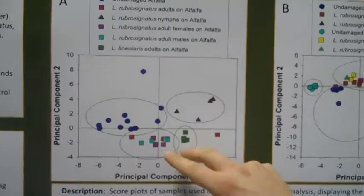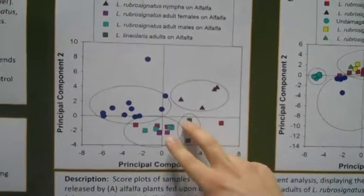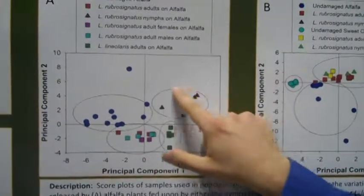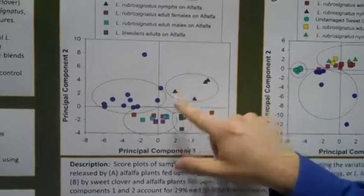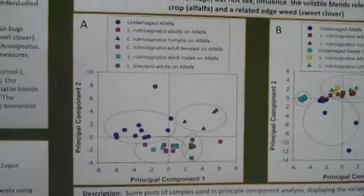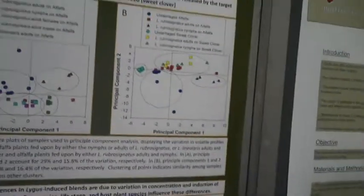Then Lygus rubrosignatus nymphs, this set of data here, clustered separately from Lygus rubrosignatus adults. That showed that on the same plant, the same species of bug, depending on its life stage, had variations in the volatile blend coming off of it.